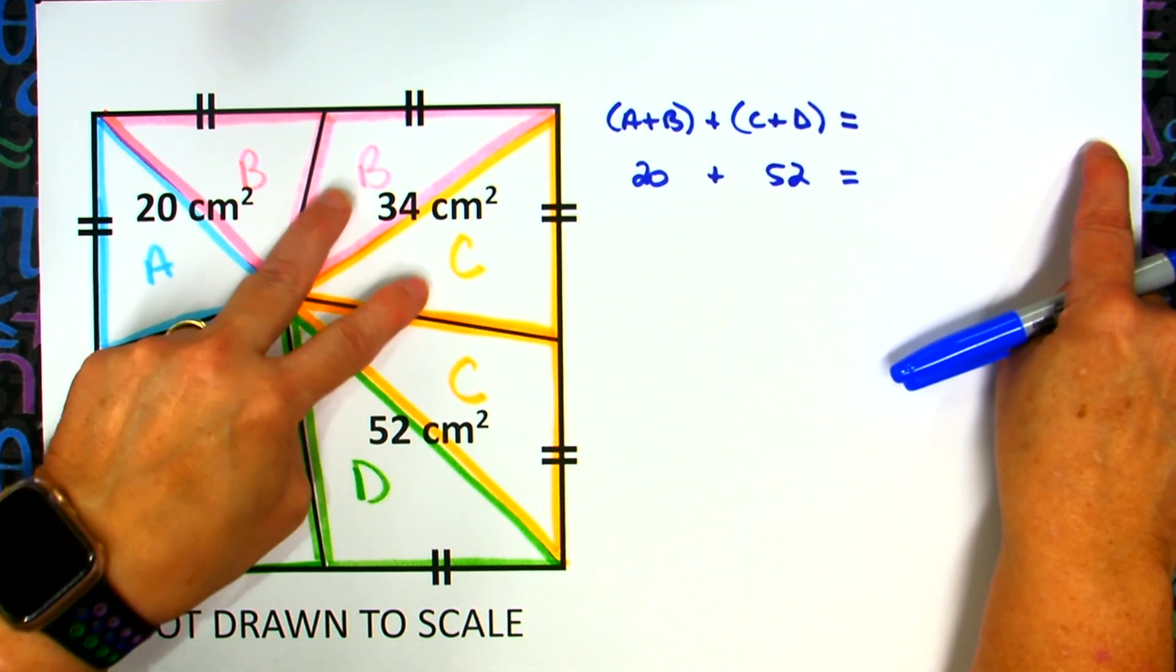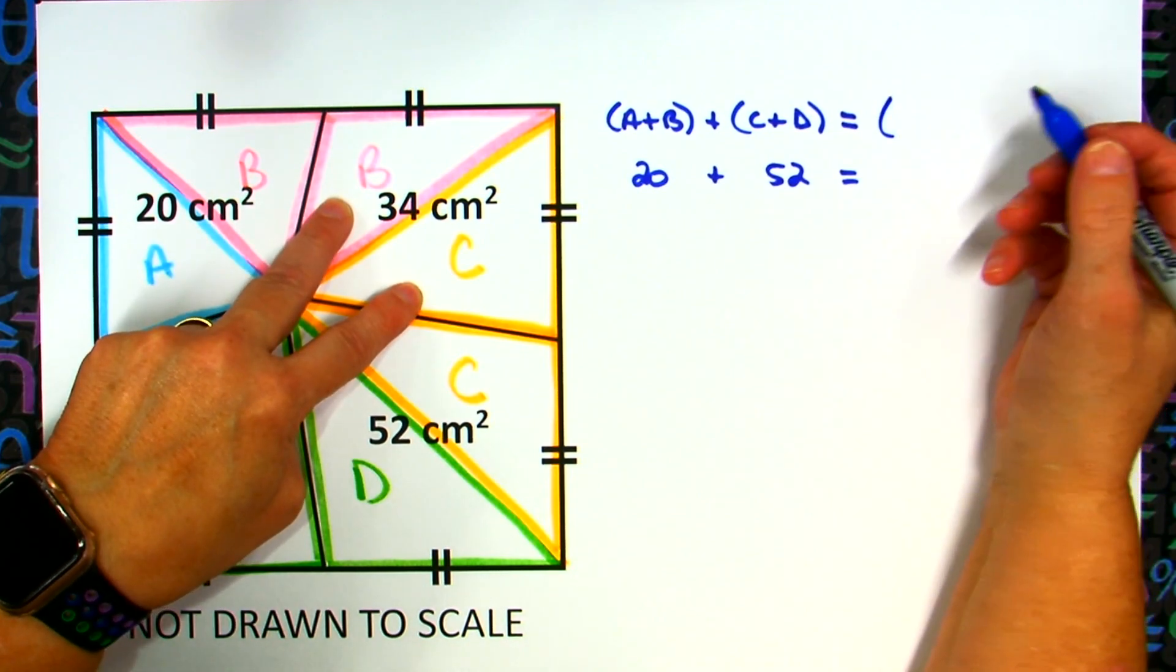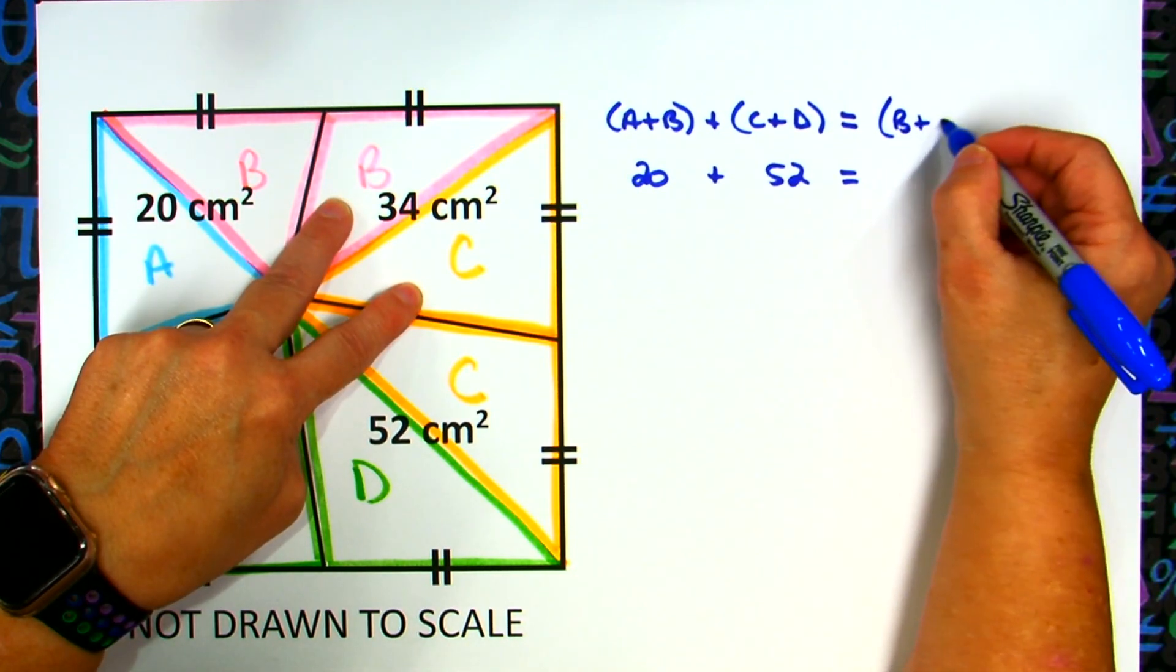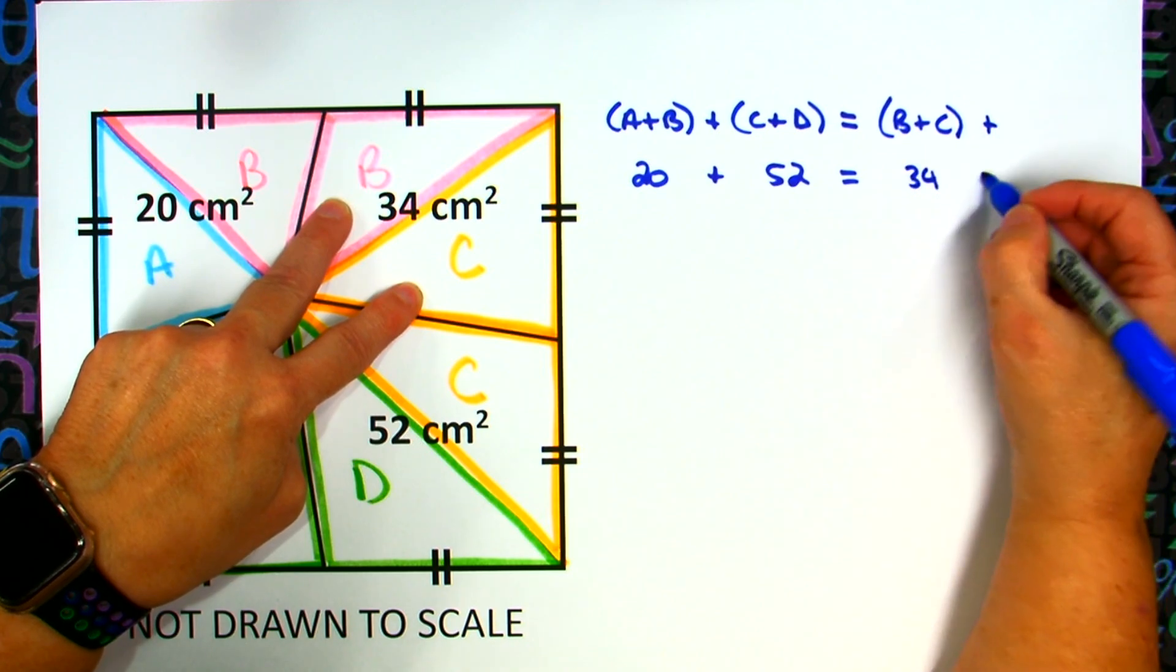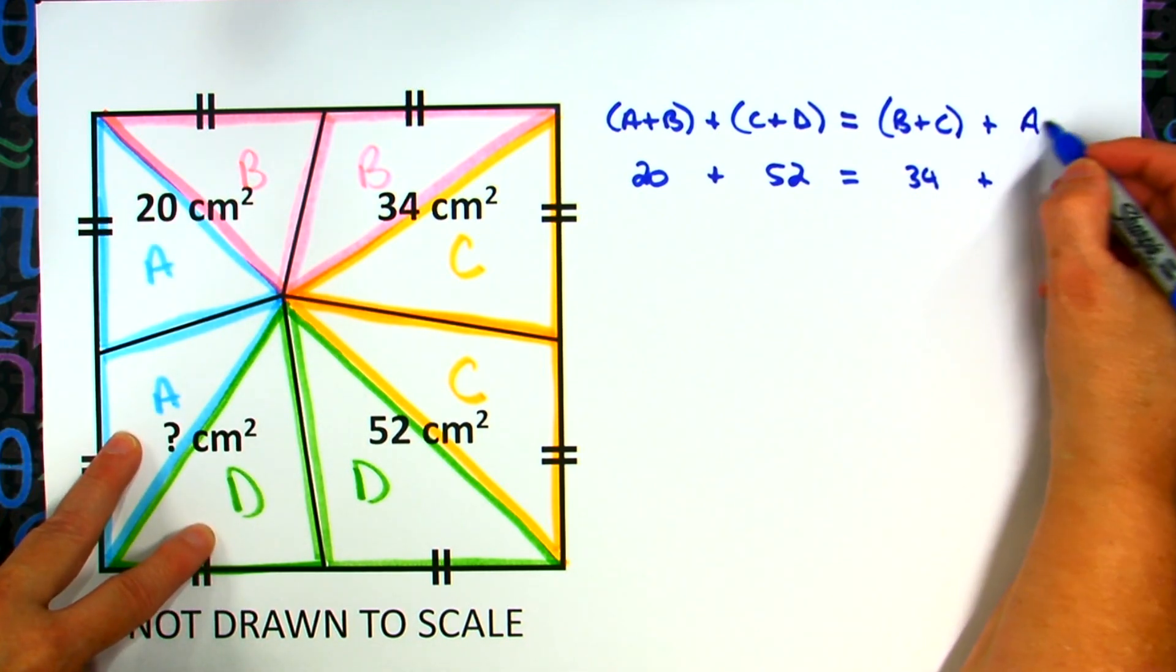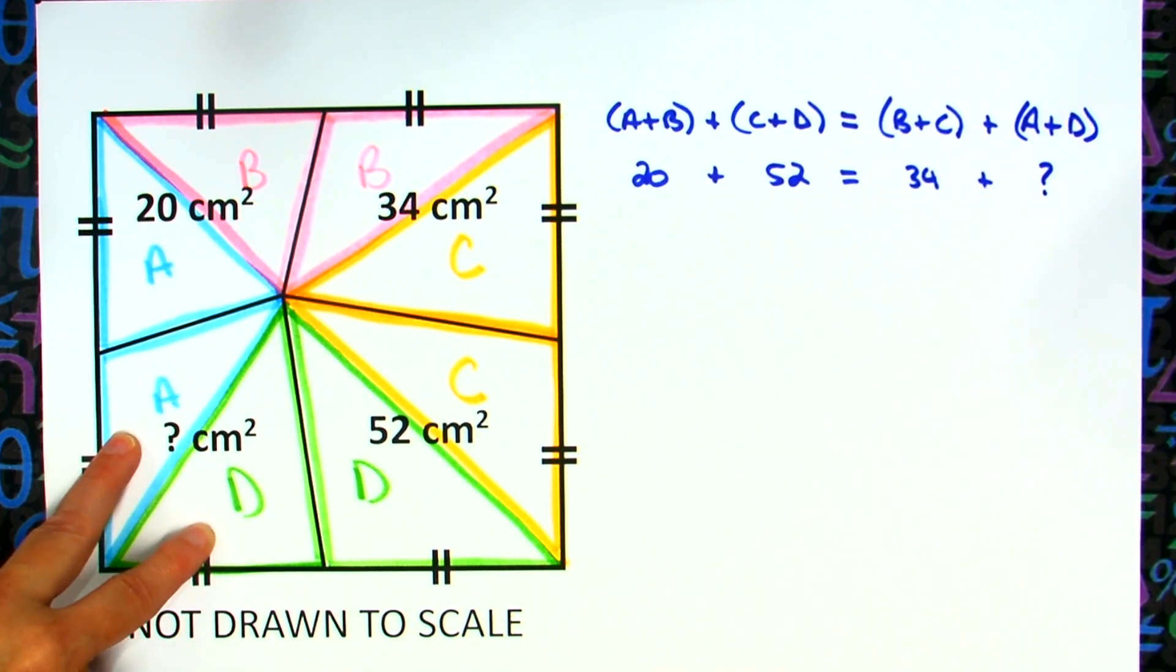So there's B plus C, and I know that's 34, and then I'm going to add to that my area of A plus D, and that's my unknown. I don't know what that is.